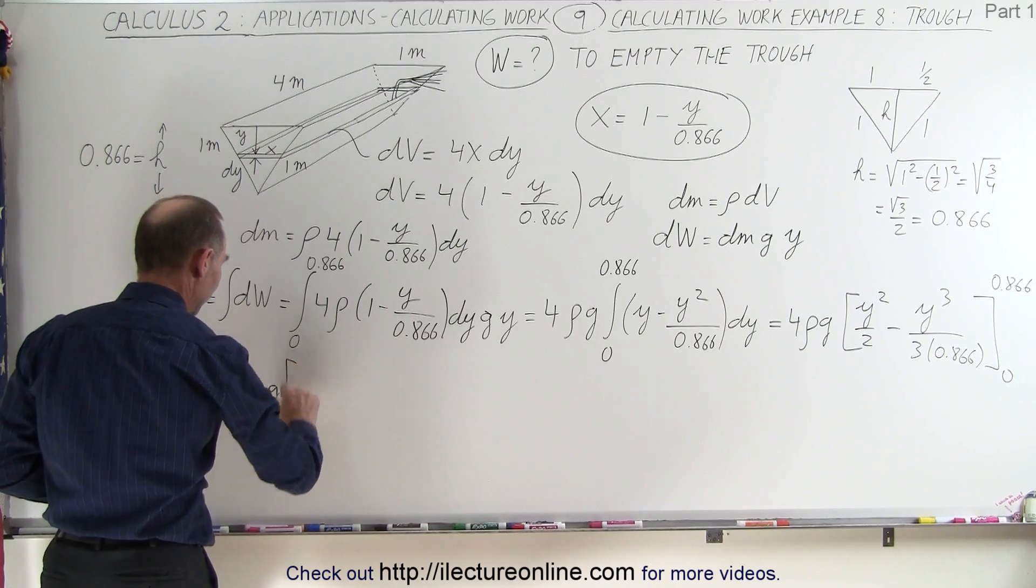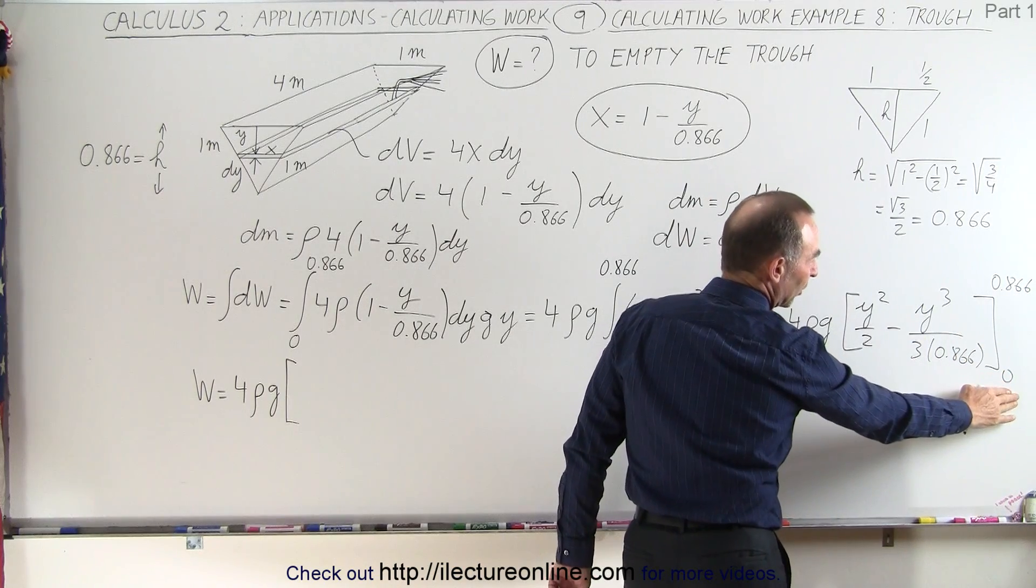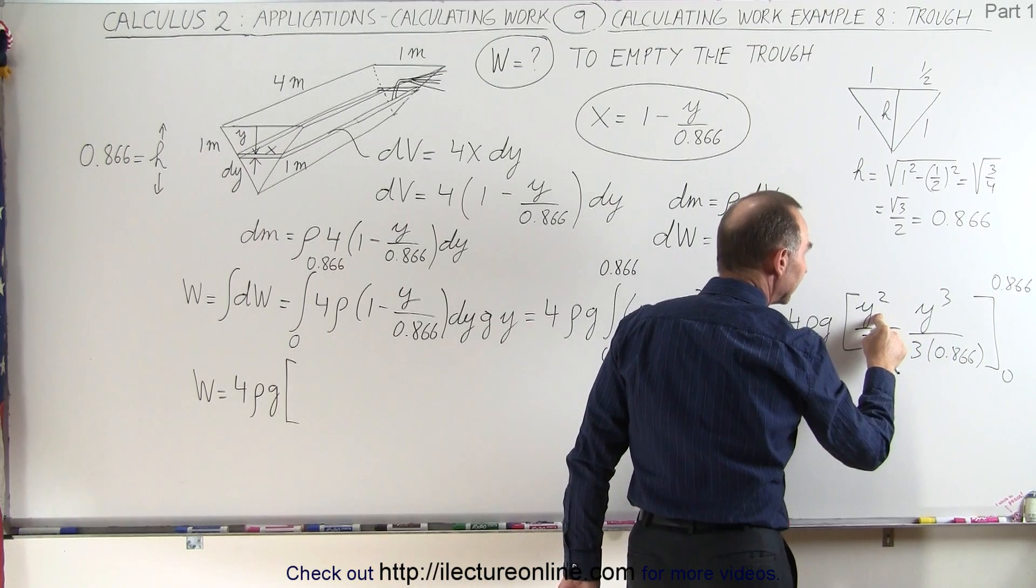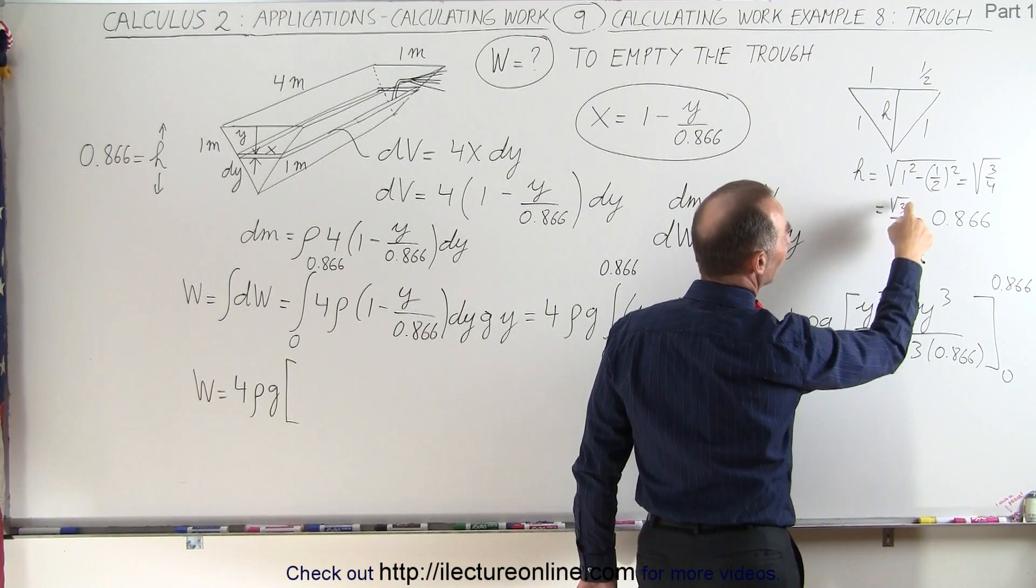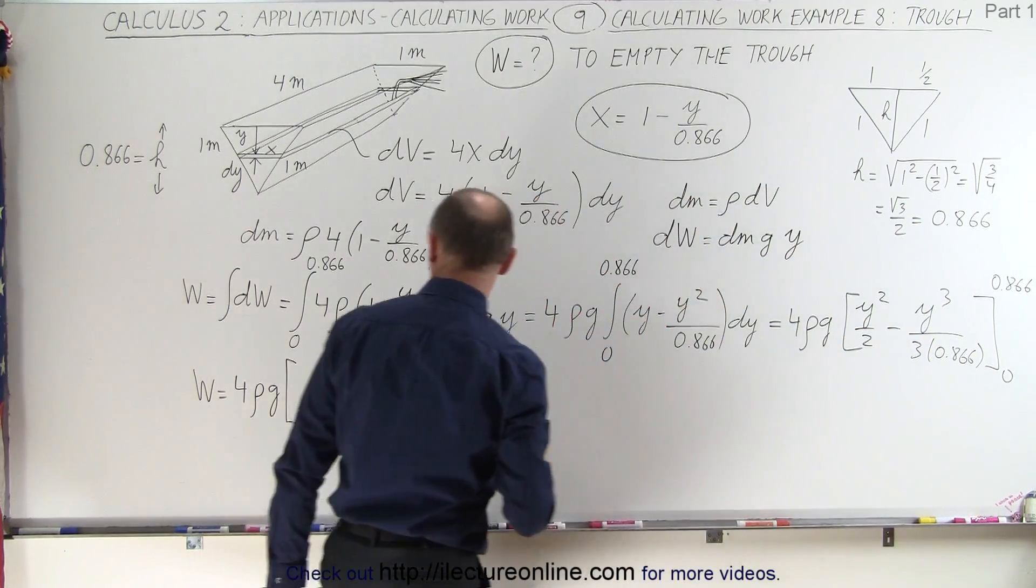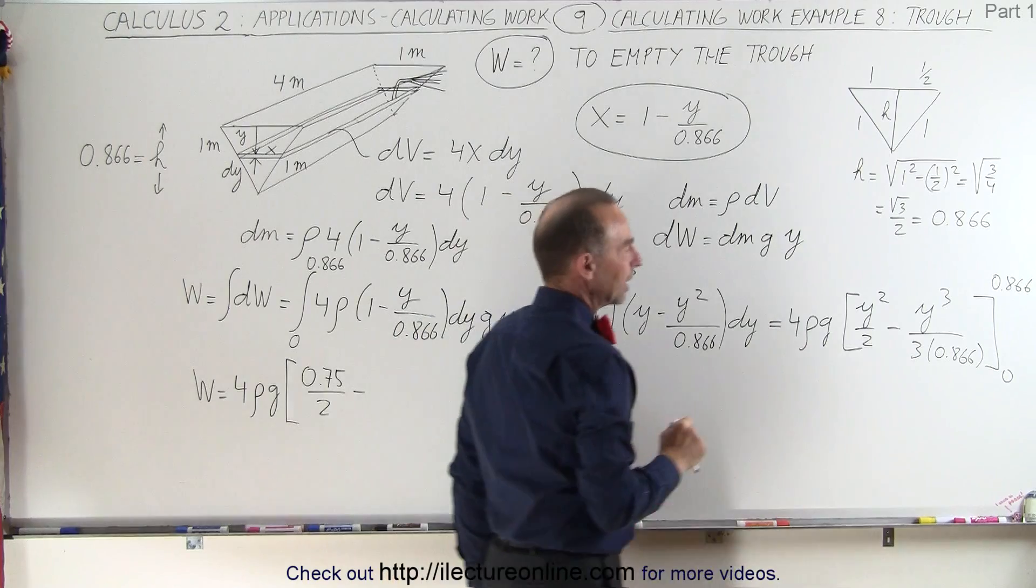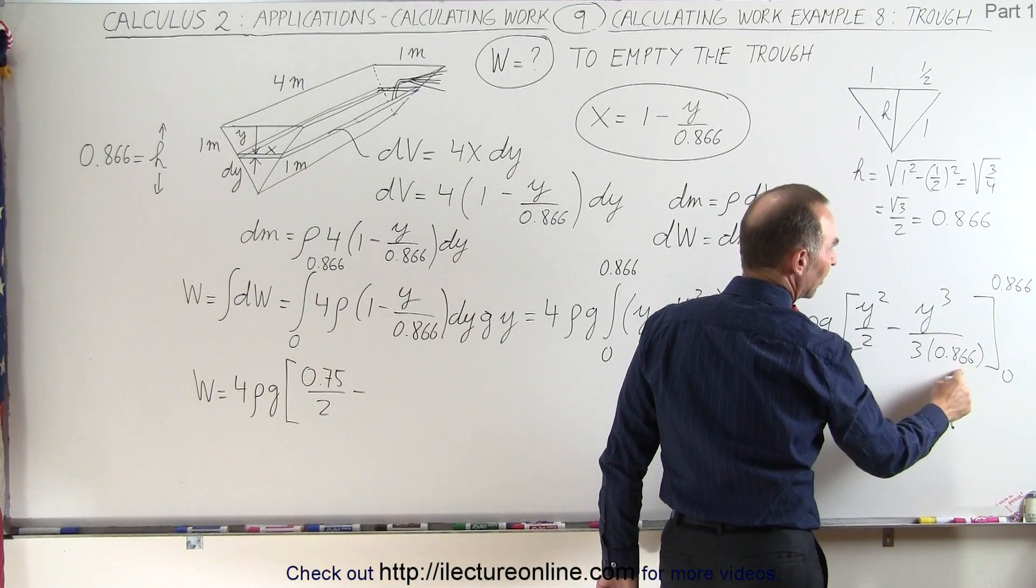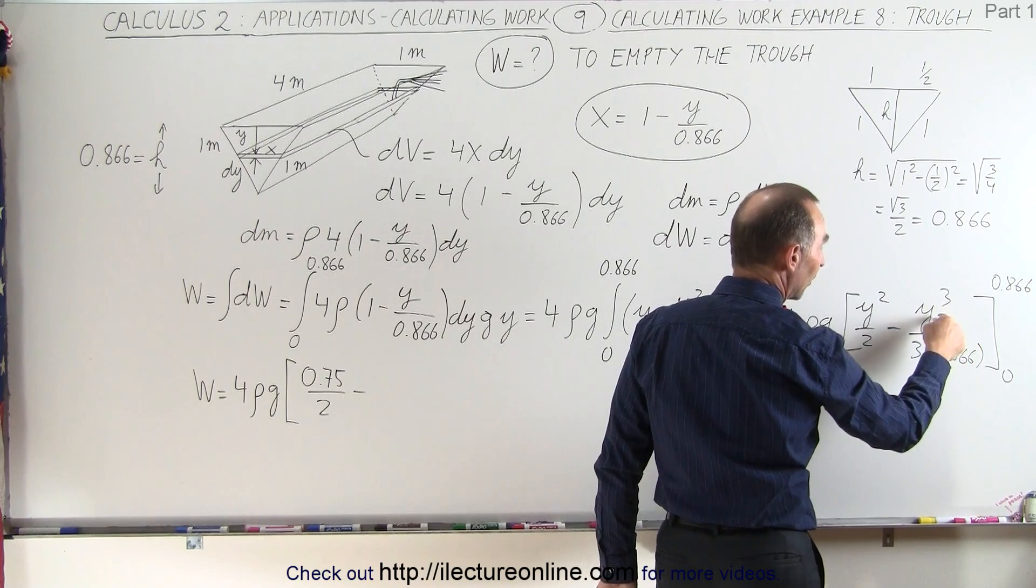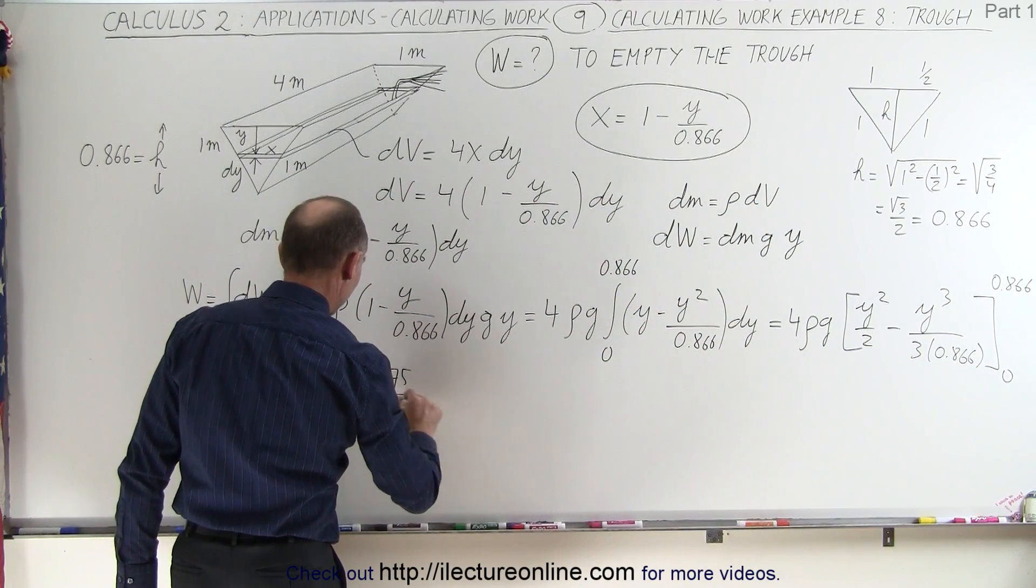So the work done is equal to 4 times the density times g times, we plug in the upper limit. First of all, when we plug in the lower limit, we get 0, so we don't have to worry about the lower limit. When we plug in the upper limit, 0.866 squared, well, notice that if we square this, we get 3 over 4, which is 0.75. So we get 0.75 divided by 2. So 0.75 divided by 2 minus. Here, when we plug in 0.866 cubed, but we still have a 0.866 at the bottom, that's the same as 0.866 squared, which again is 0.75 divided by 3. So that would be minus 0.75 divided by 3.